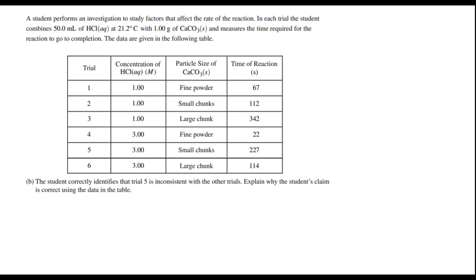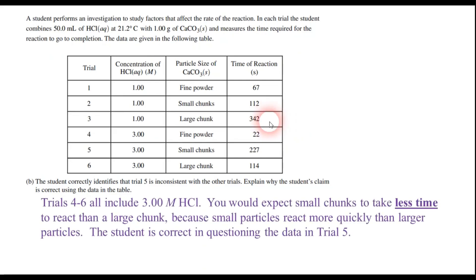Explain why this claim is correct. Well, remember that in kinetics, we would expect that the large chunk would react the slowest. And that's what happens for trials 1, 2, and 3. But notice trials 4, 5, and 6. We have fine powder, small chunks, large chunks. You would expect the small chunks to take less time to react than the large chunk because smaller particles are going to react more quickly than larger particles. And so that's why the student is correct in questioning that data for trial number 5. So give yourself one point if you said that.